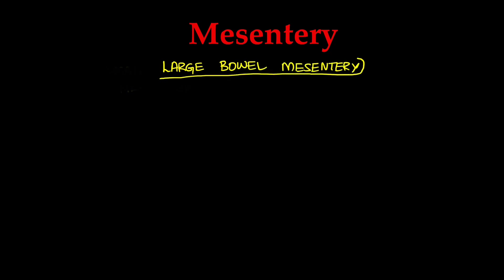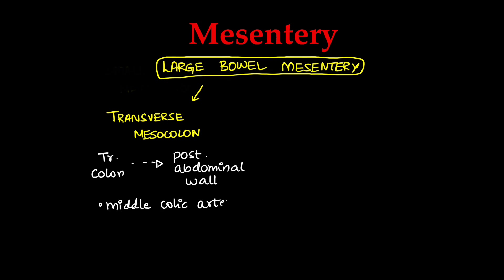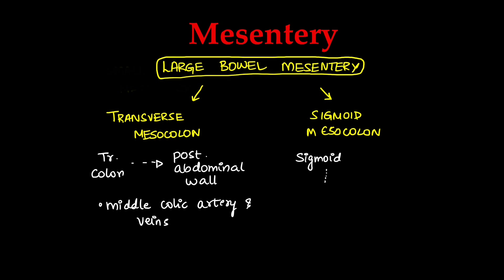Coming to the large bowel mesentery: the ascending and descending colon lie behind the mesentery. The transverse colon and sigmoid colon are attached by the mesentery. The transverse colon mesentery is known as the transverse mesocolon and attaches the transverse colon to the posterior abdominal wall, with the middle colic artery, veins and lymphatics running through it. The sigmoid mesentery is called the sigmoid mesocolon and attaches the sigmoid colon to the posterior pelvic wall.